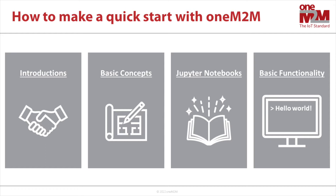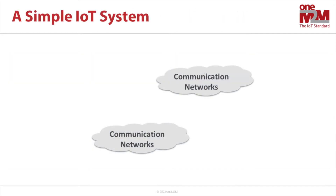That's wonderful, thanks Andreas. So let's get going with a definition of an IoT system that we will use in the remainder of this series. Everywhere we go we are surrounded by communication networks — at home, in the factory, and when we are out and about. So let's begin with these.